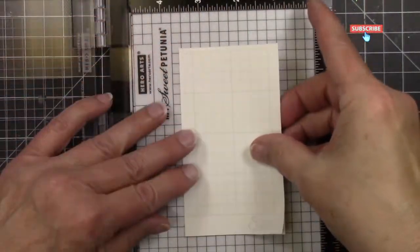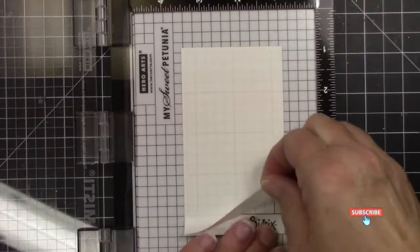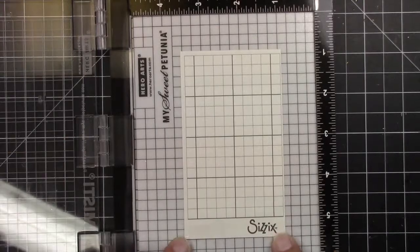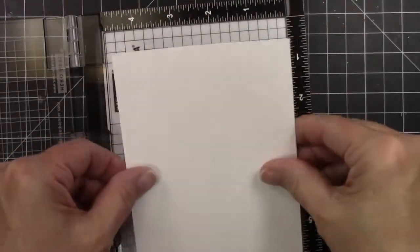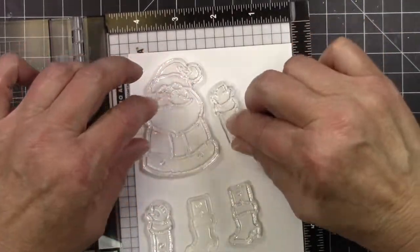I'm putting down some sticky into my Mini Misti. This is from Sizzix and it's just something that's like a little tacky strip. You can use it over and over. That way you don't have to cut up one of those big sticky mats.